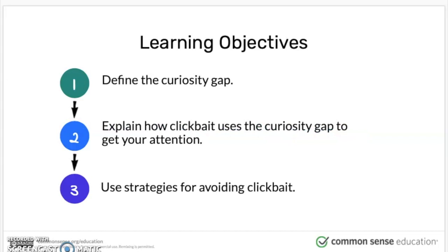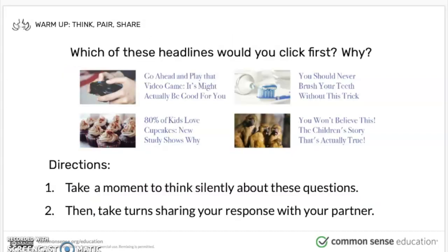We're gonna talk about something called the curiosity gap, explain how clickbait uses the curiosity gap to get your attention, and then talk about how we can avoid clickbait. Think about which one of these you guys would click first: 'Go ahead and play that video game — it might actually be good for you.' 'You should never brush your teeth without this trick.' '80% of kids love cupcakes — new study shows why.' 'You won't believe this — the children's story that's actually true.' Each one of these is an attention-getting headline, and you just have to think about why it gets your attention.